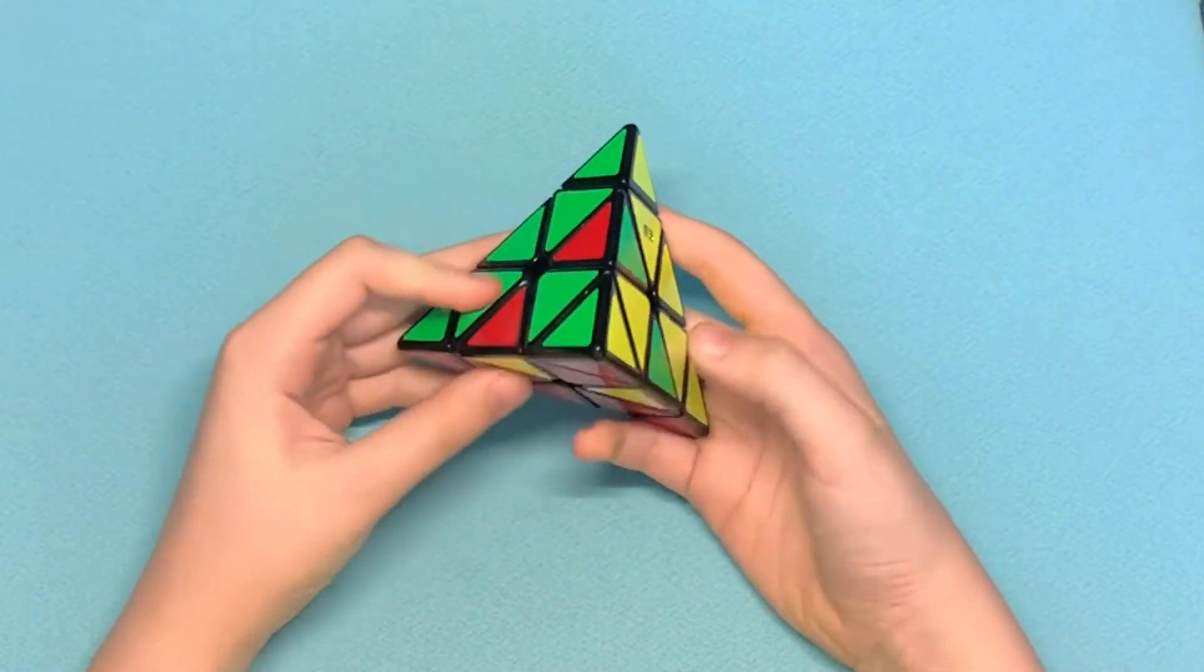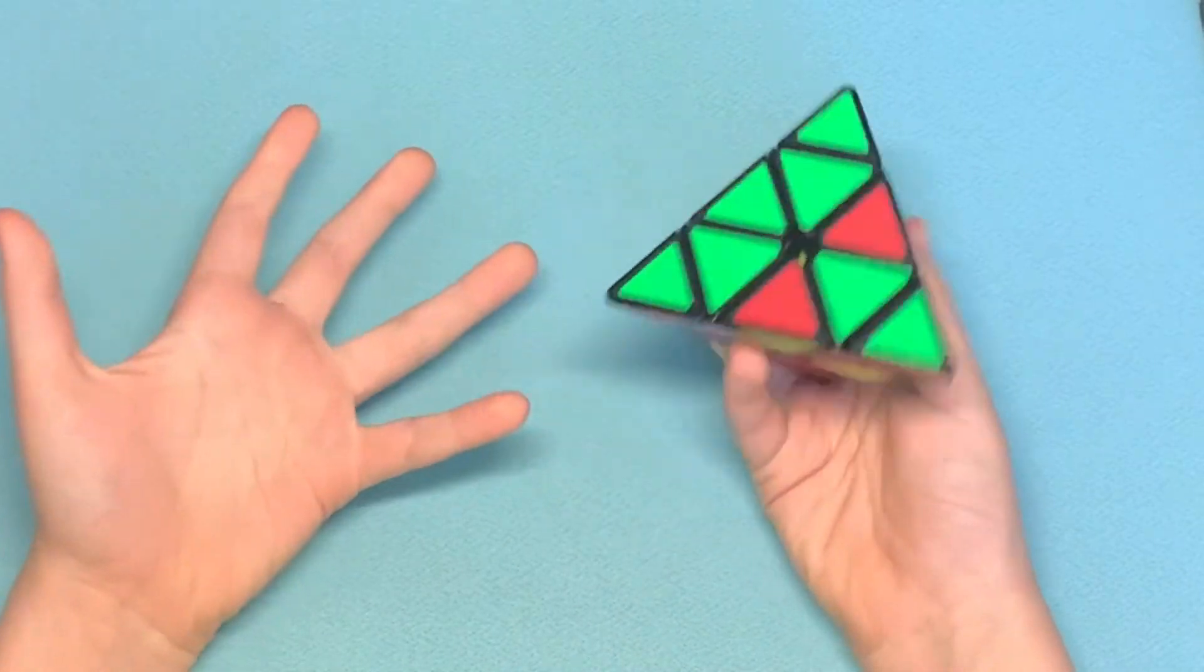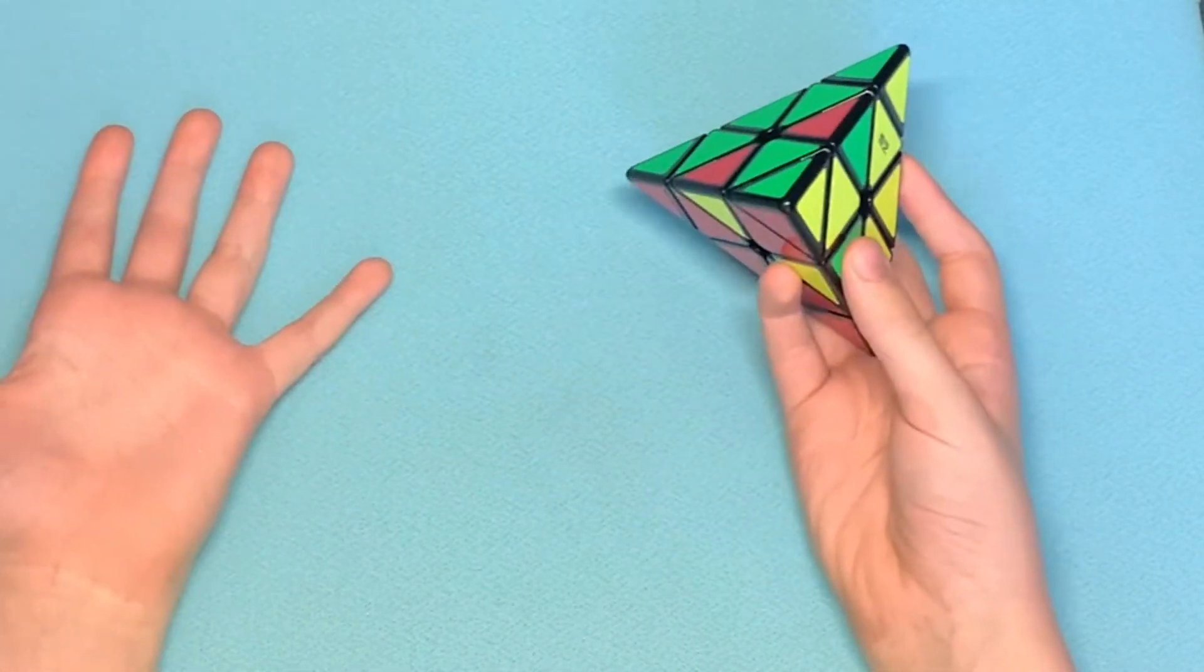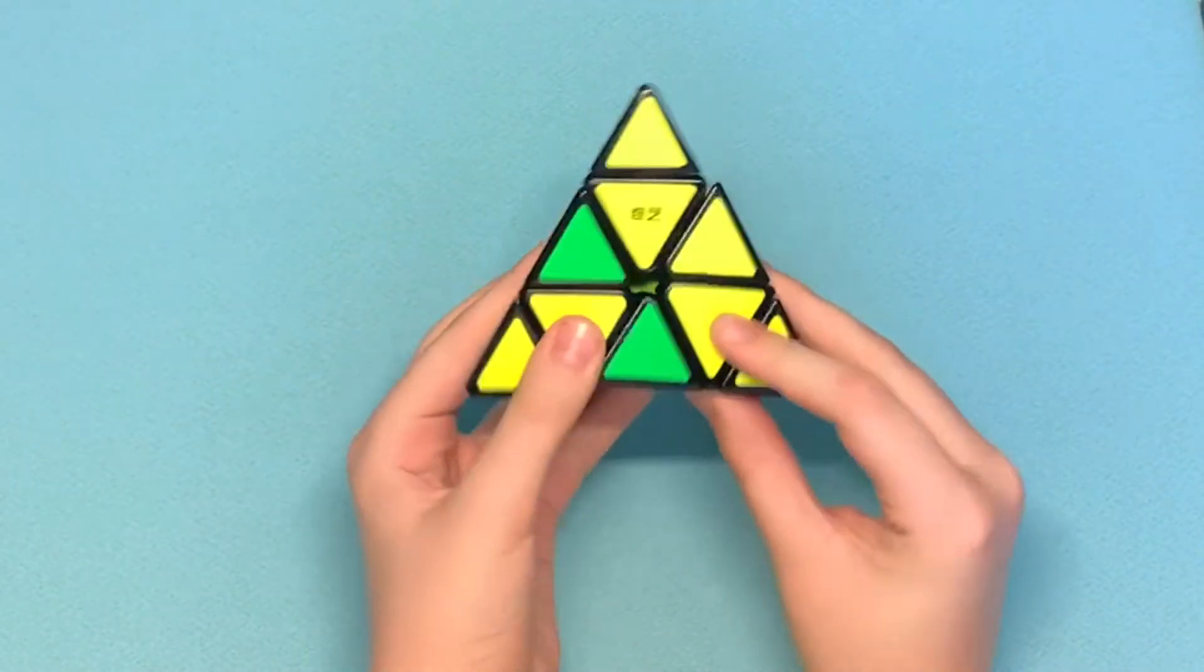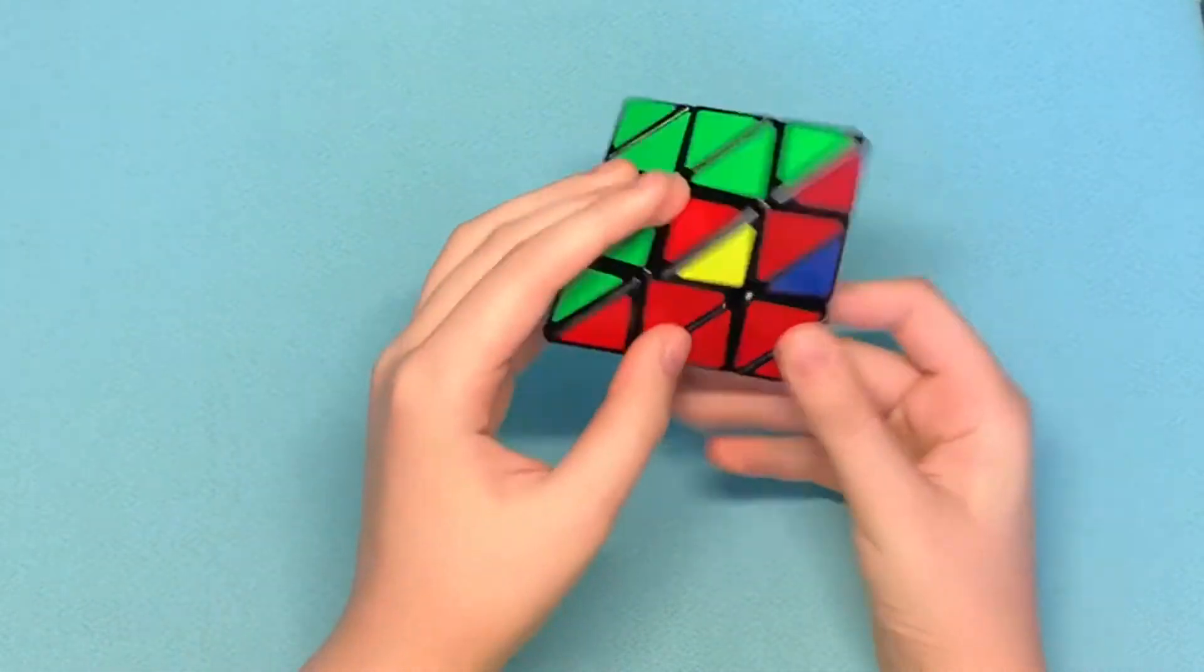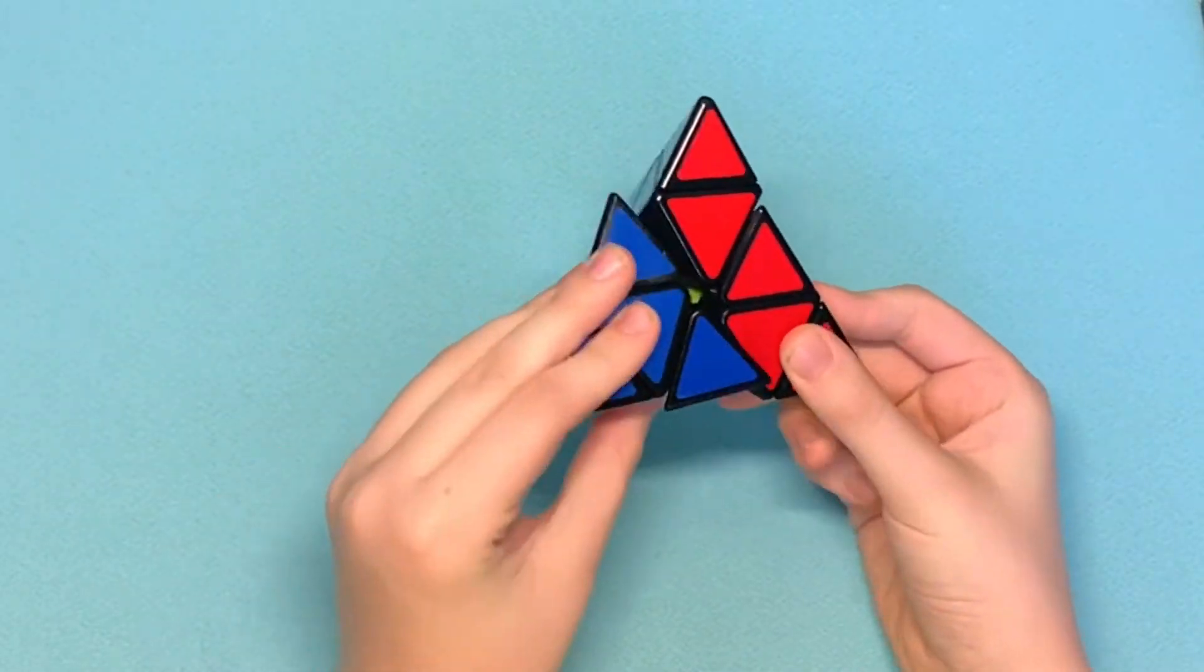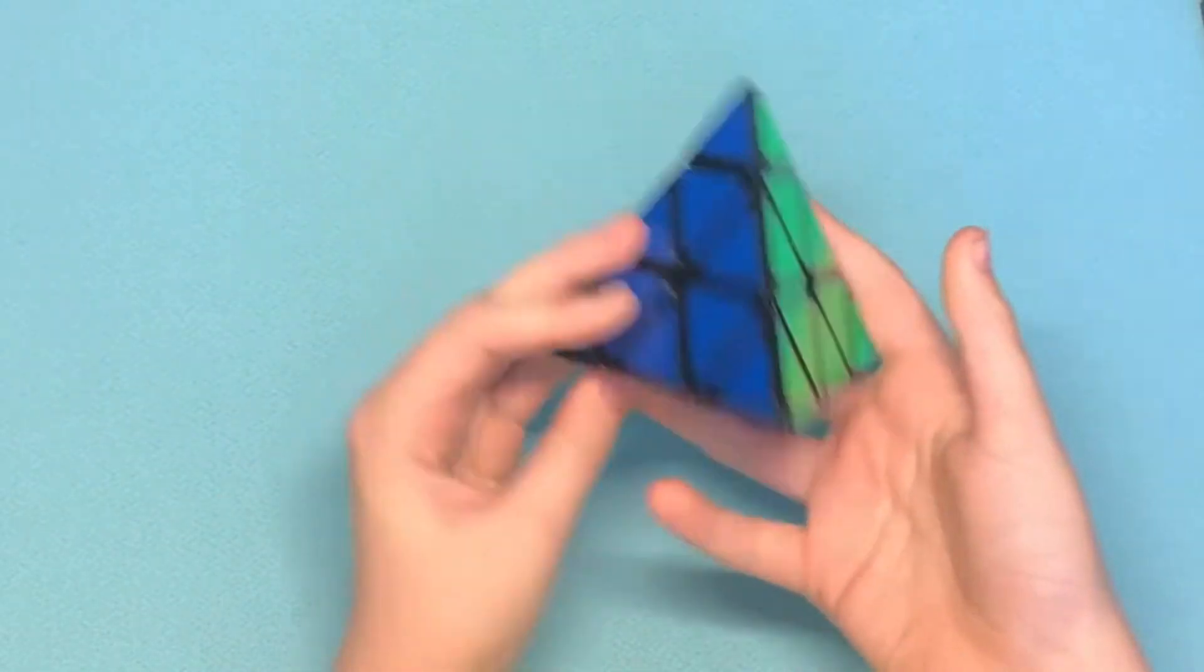But sometimes you can actually get this option without actually doing that. So this is another option. What you do in this case is you solve a side. In this case, I'm doing green. And then, yeah, it's pretty much like that.